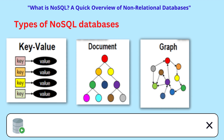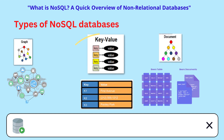There are several different types of NoSQL databases, including key-value stores, document databases, and graph databases. Key-value stores are designed to store data as a simple key-value pair, with the key being used to retrieve the value. Document databases store data as documents, which can contain complex data structures. Graph databases are used to store and query data that has complex relationships.